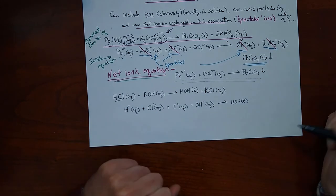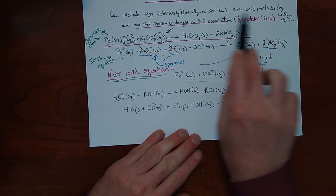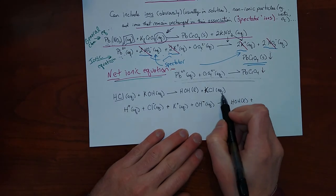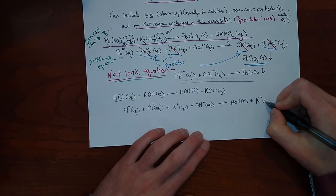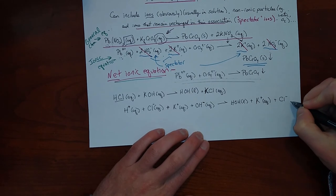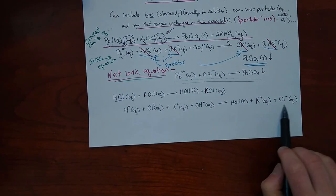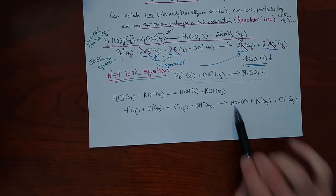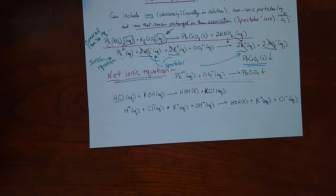Water is not split into its separate ions — it's a covalent compound. That's an example of non-ionic particles being included in the ionic equation. Potassium chloride is ionic and dissolved in water, so we write K⁺ and Cl⁻ separately. Just like with a regular equation, we check that things are balanced: 2 hydrogens on each side, 1 oxygen, 1 potassium, 1 chloride. The rules of balance still apply. So this is the complete ionic form of this equation.